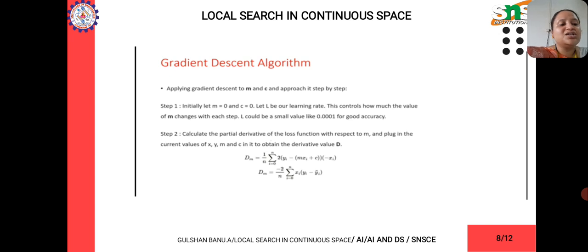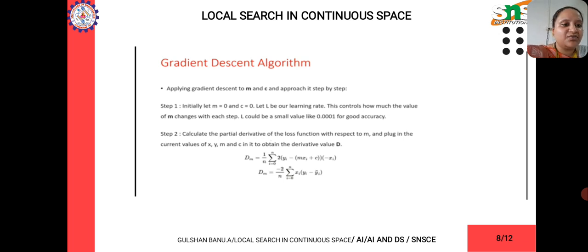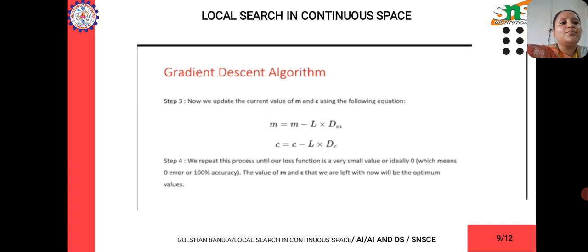The next step is to calculate the partial derivative of the loss function. Substituting the given values, dm = (1/n) · Σ(i=0) of 2·(yi − (mxi + c)) · (−xi). Solving this gives dm = (−2/n) · Σ(i=0 to n) of xi·(yi − ŷi). When updating the values of m and c using these derivatives, you determine the new values of m and c.